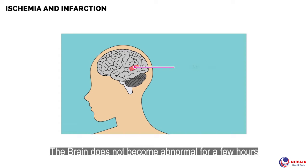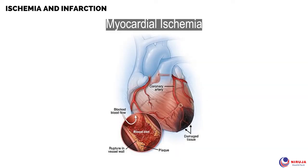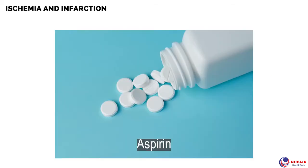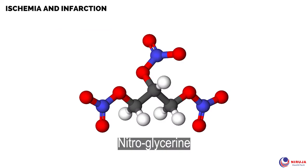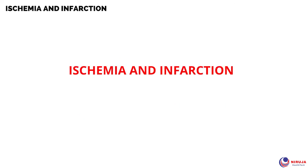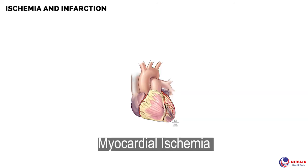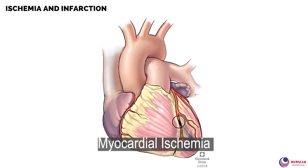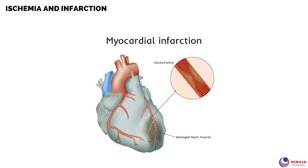Treatment for myocardial ischemia is mainly to increase the blood flow to the heart, which can be achieved through the following medications: aspirin by oral route of administration; nitroglycerin, which can be administered under the tongue or intravenously; and nitrates, which can be administered under the tongue or by intravenous infusion.